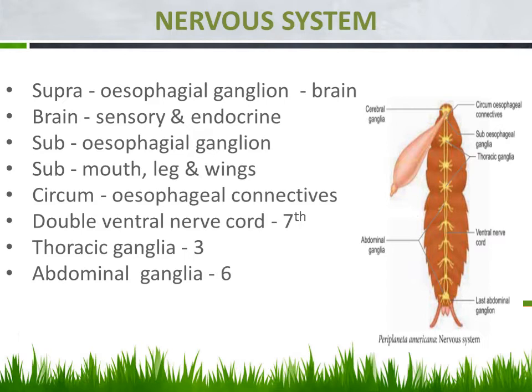The supraesophageal ganglion is located above the esophagus, and this ganglion performs like a brain — the same as we said for the earthworm. The brain receives the sensory signals from the sense organs and also performs endocrine secretion, meaning it secretes hormones. That is the role of the brain in the cockroach.